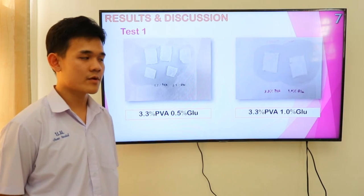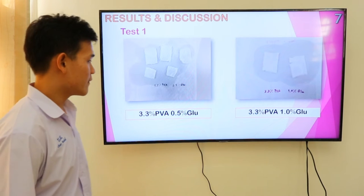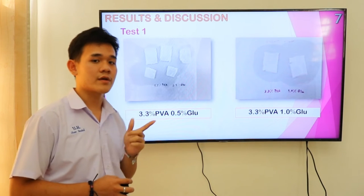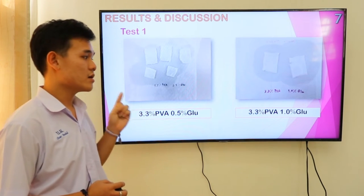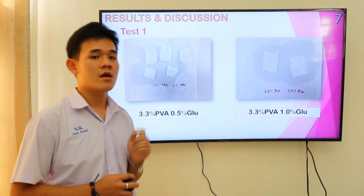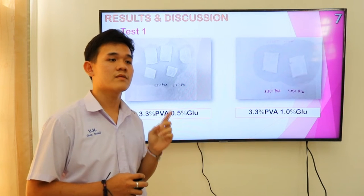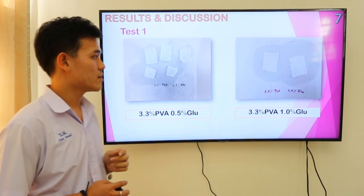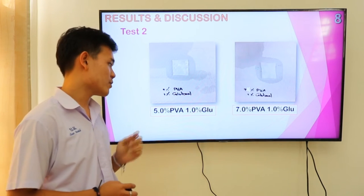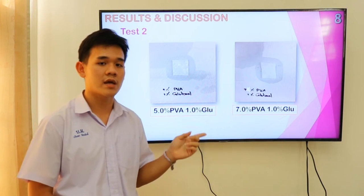From the results of the experiment, it was found that the membrane has low porosity and it looks like a gel. But if I increase the concentration of glutaraldehyde to 1%, it was found that the membrane has more stiffness. In the next test, I use 5% polyvinyl alcohol with 1% glutaraldehyde, and 7% polyvinyl alcohol with 1% glutaraldehyde.